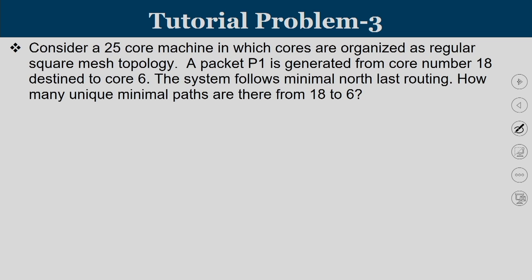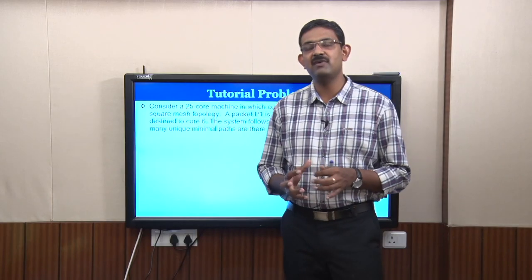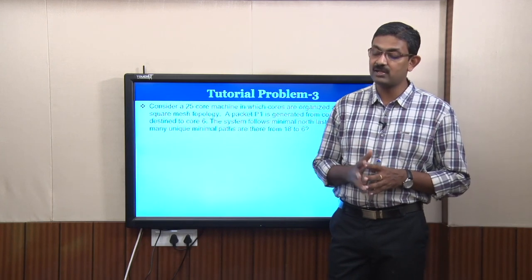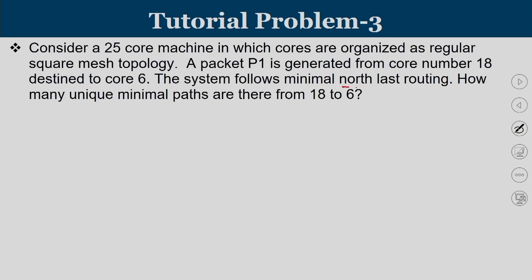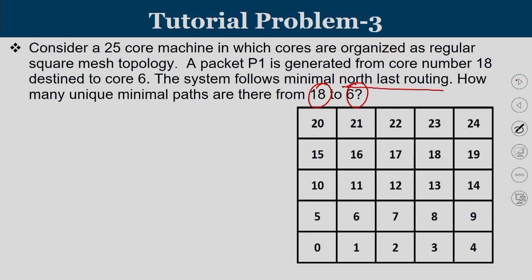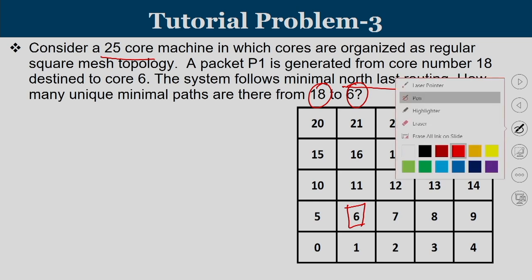Consider a 25-core machine where cores are organized as a rectangular square mesh topology. A packet P1 is generated from core number 18, destined to core 6. The system follows minimal north-last routing. How many unique paths are there from 18 to 6? This is a 5×5 network. The packet travels from 18 to 6 following minimal north-last routing.